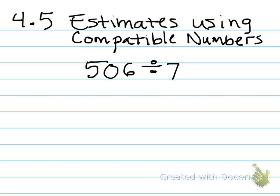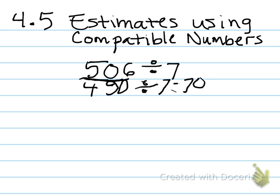Now we're going to do lesson 4.5 review, which is using compatible numbers to make estimates. Take it away, Mathlete. So first, you see 506 divided by 7. We're using estimates with compatible numbers, so we underline the 50 because we need to find what's close to that that can go into 7. That'll be 49, so we do 490 divided by 7. And that'll equal 70, because 49 divided by 7 is 7, and then you carry the 0. Excellent.